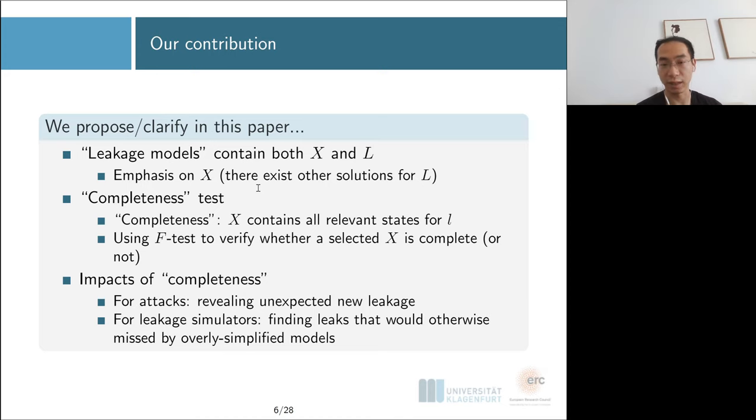We're going to emphasize on that and propose a test to help you find whether you have found a set of states that contains all the relevant states. We propose to use F-test to verify if a set of intermediate states is complete or not. The complete leakage model will help with attacks by revealing unexpected attack vectors, or for leakage simulators by finding leaks that would otherwise be missed by overly simplified models.